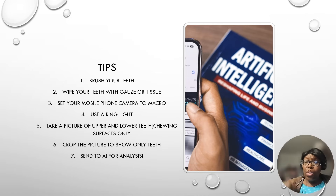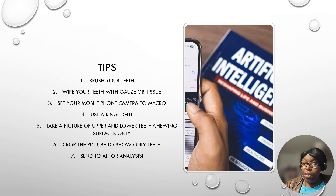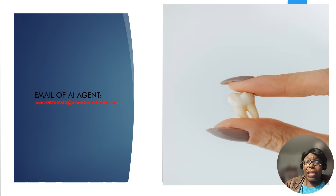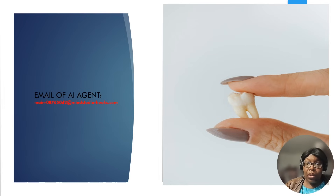After you receive the personalized report, share your experience in the comments — what is frustrating, what you want done, and how you want help in the future. The email for the AI agent is: main-08765D for delta 2 at my-studio-hooks.com. Send your pictures to that email and it will analyze them and give you a personalized report.